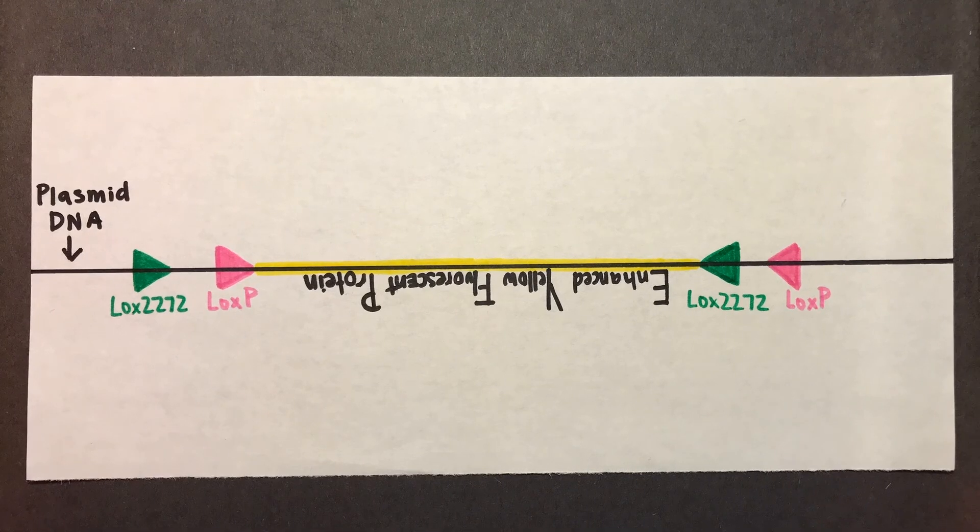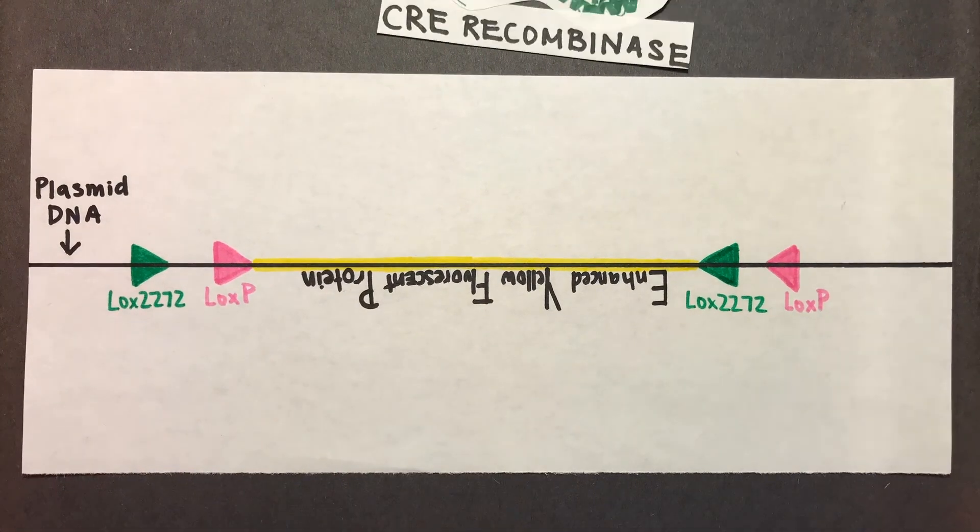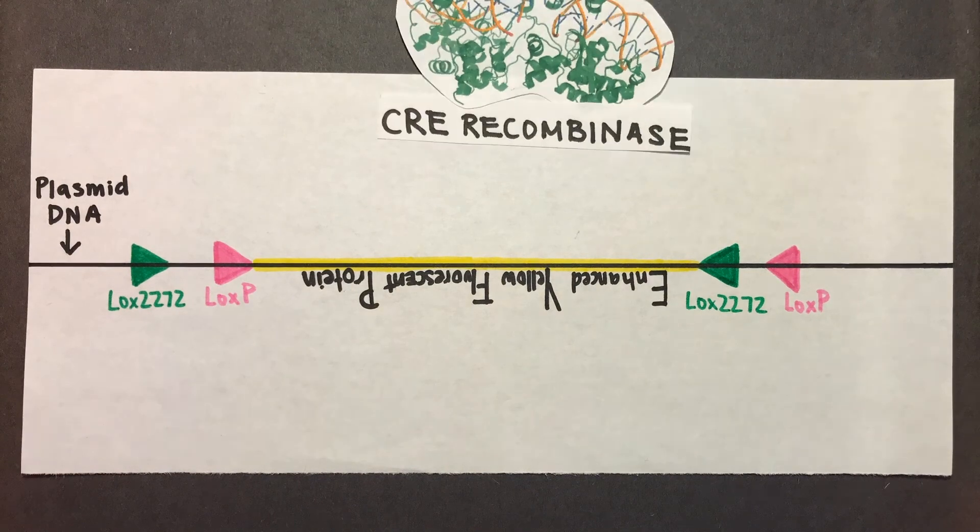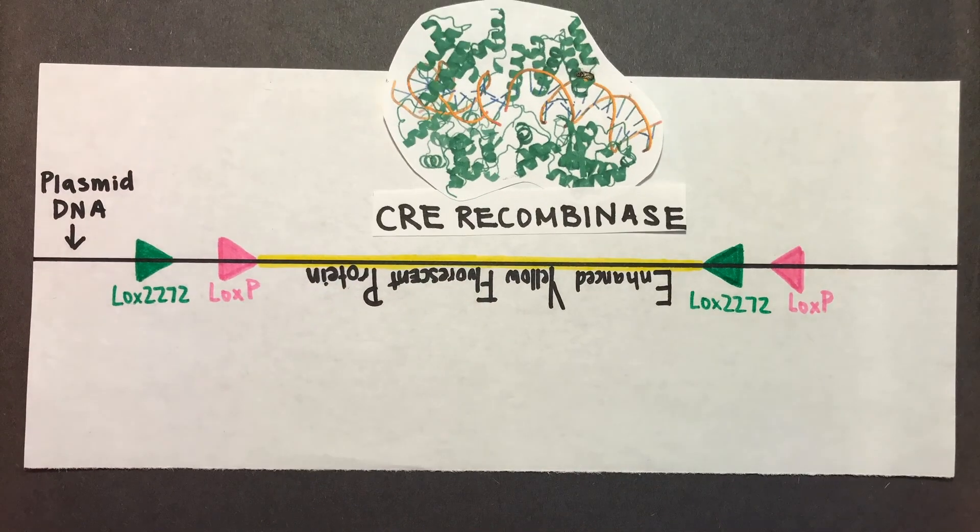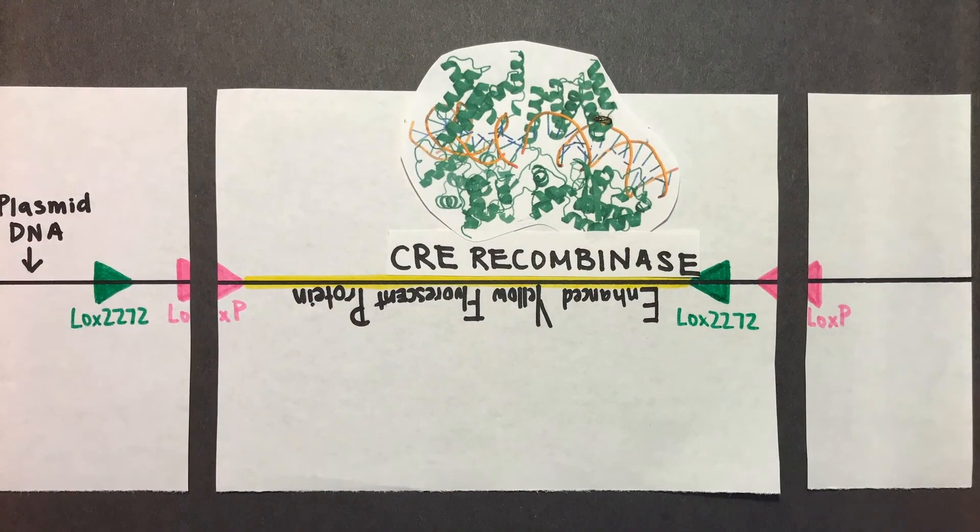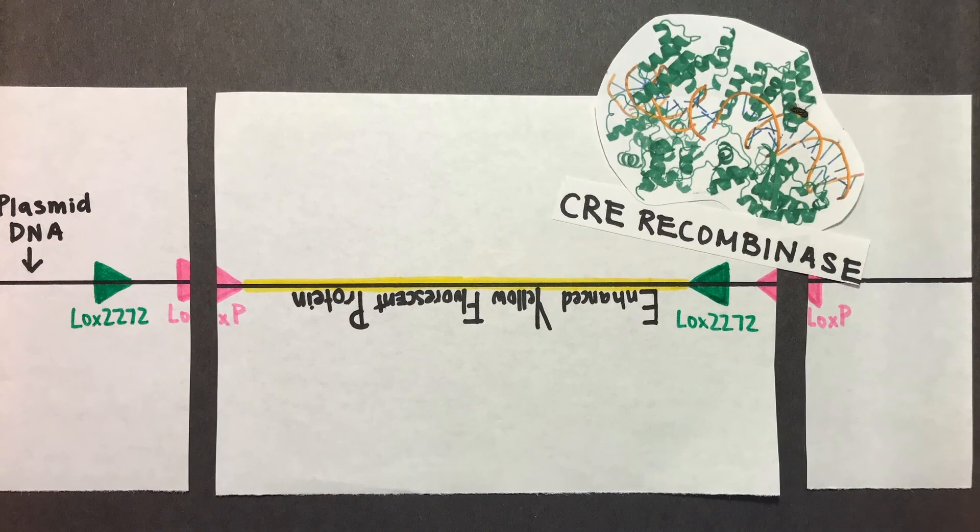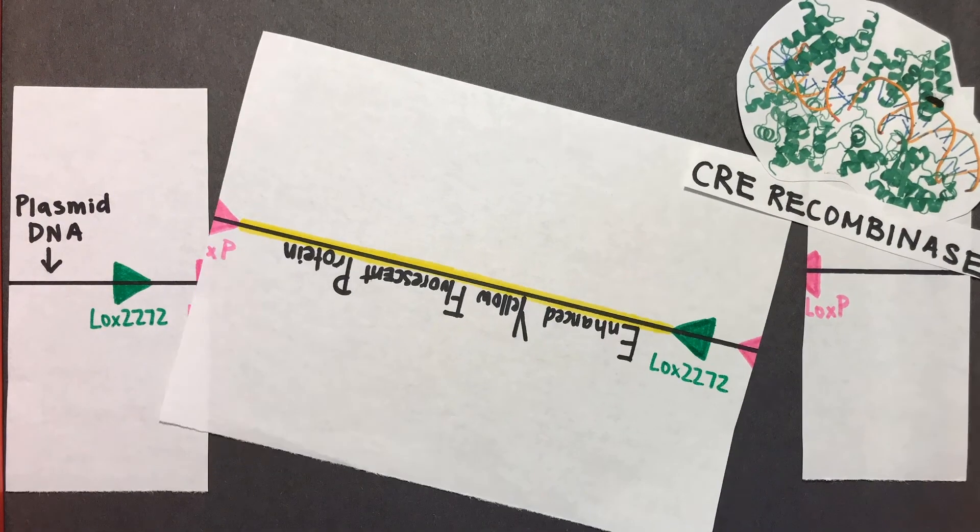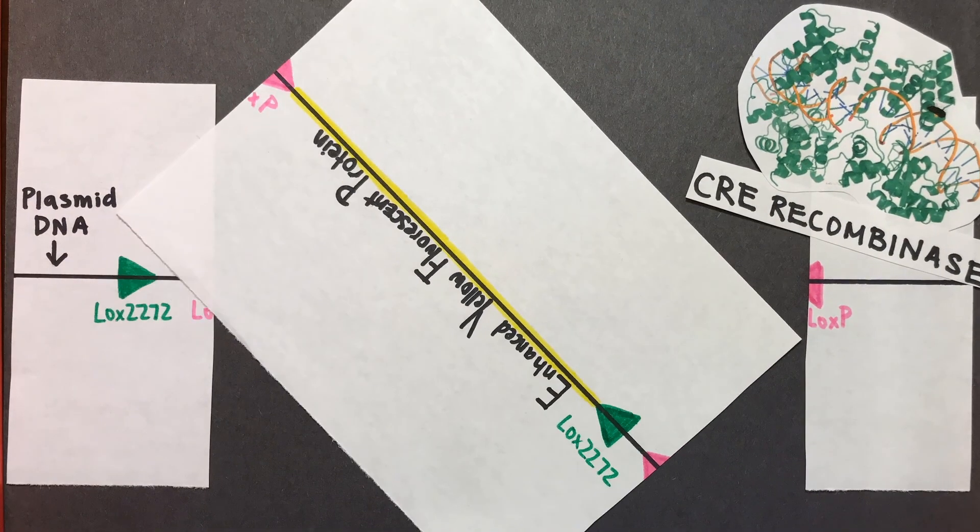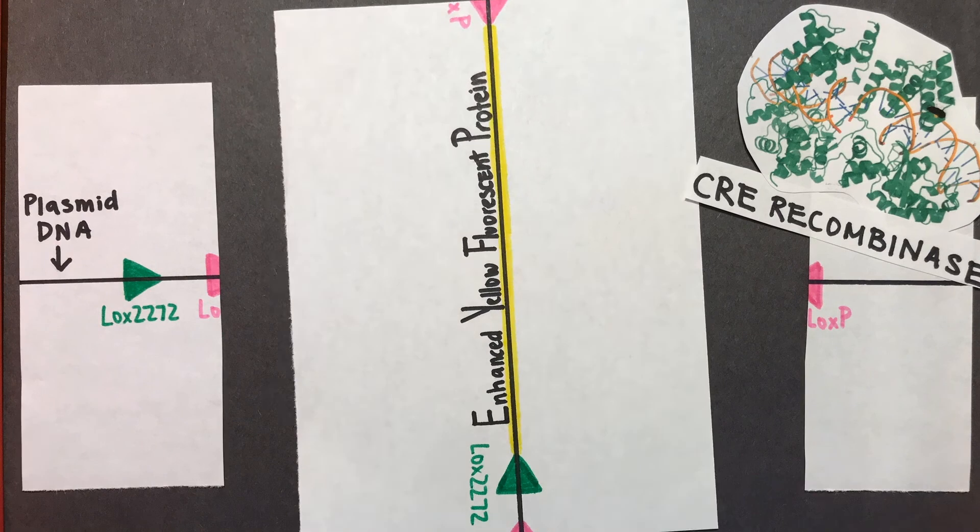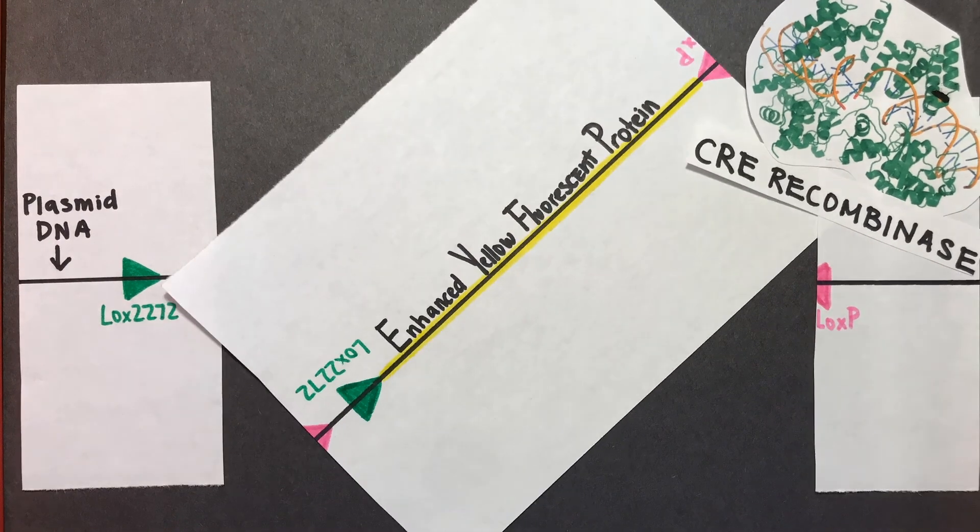When the enzyme Cre recombinase is added into the environment of this plasmid, it cuts the plasmid at its loxP sites, and then inverts the gene of interest because the loxP sites are facing towards each other. The Cre recombinase sticks around long enough to ligate the DNA back together.